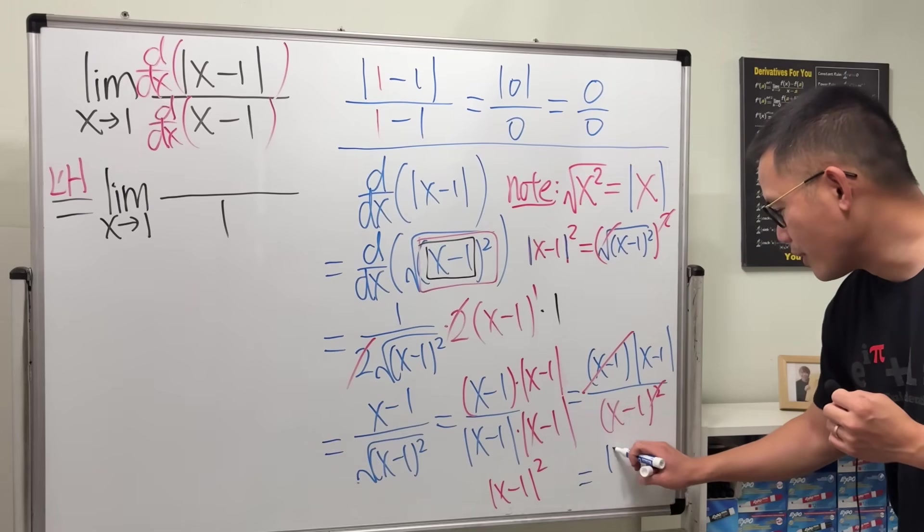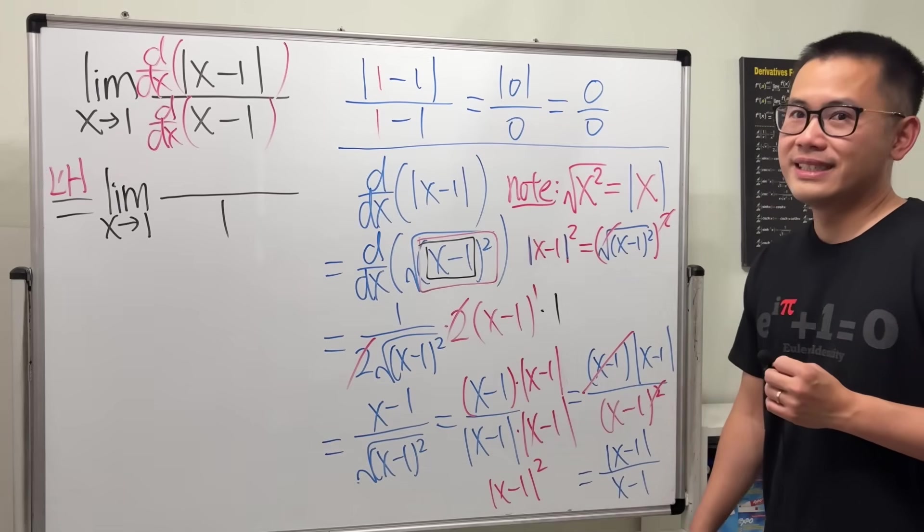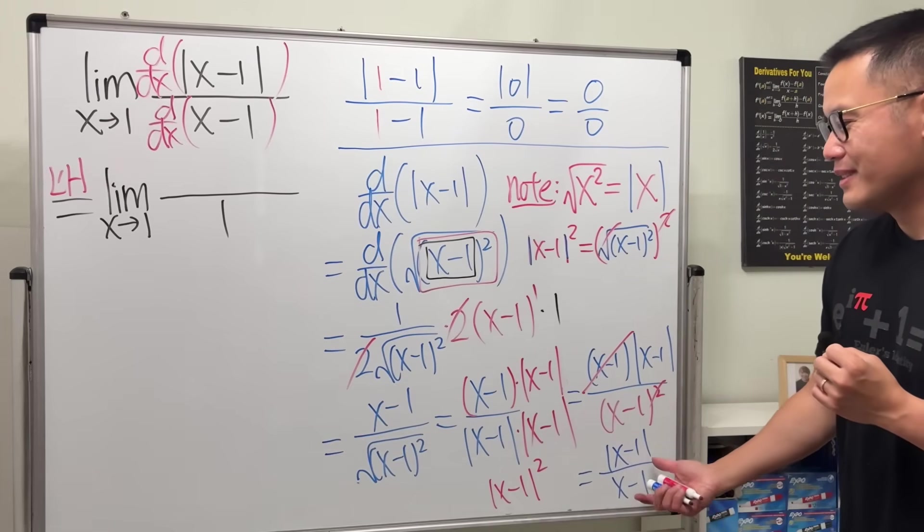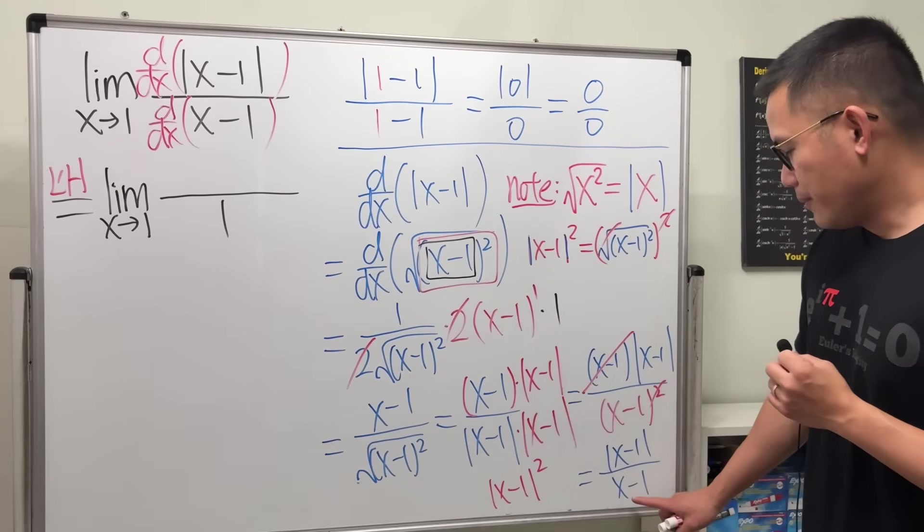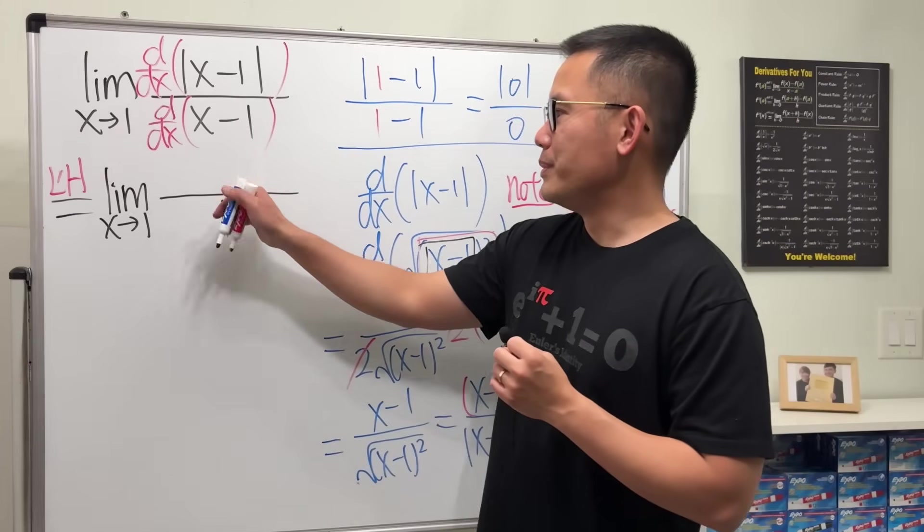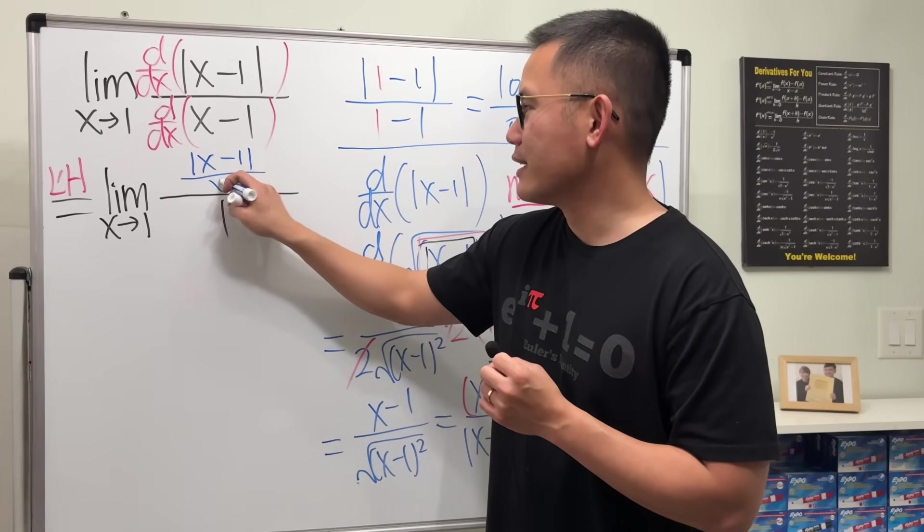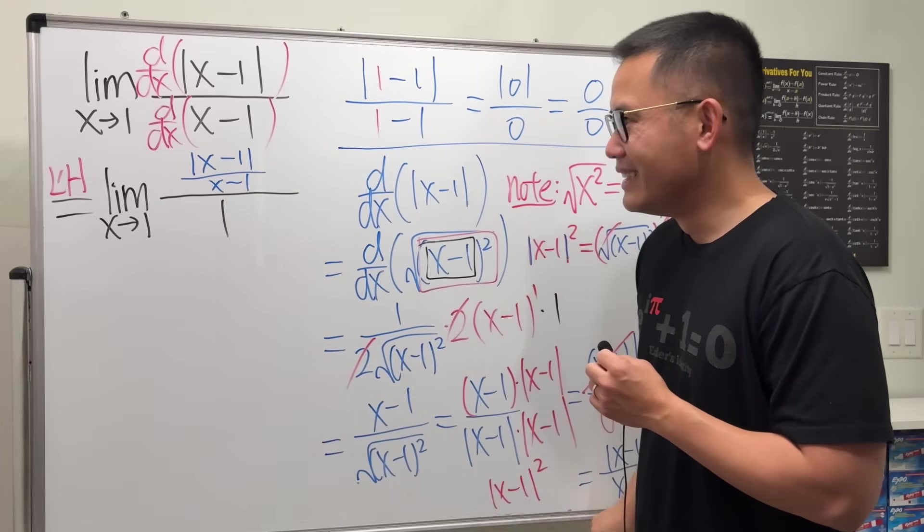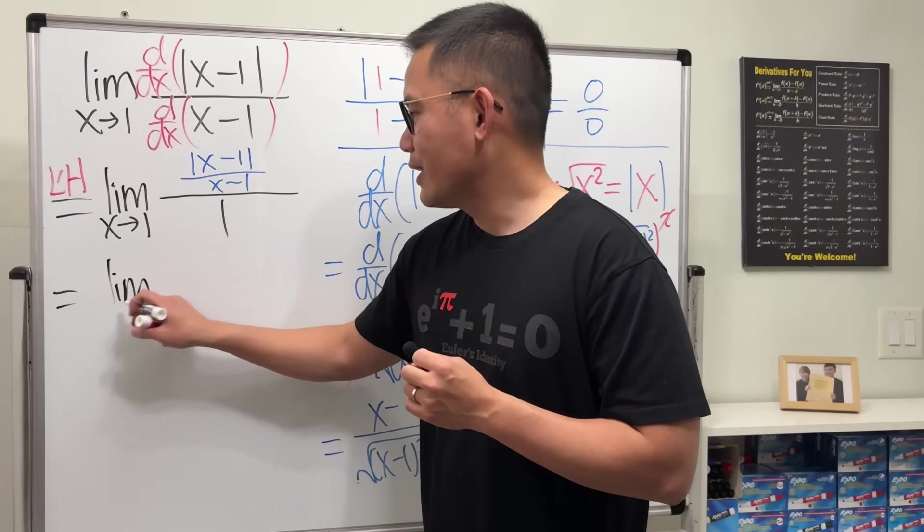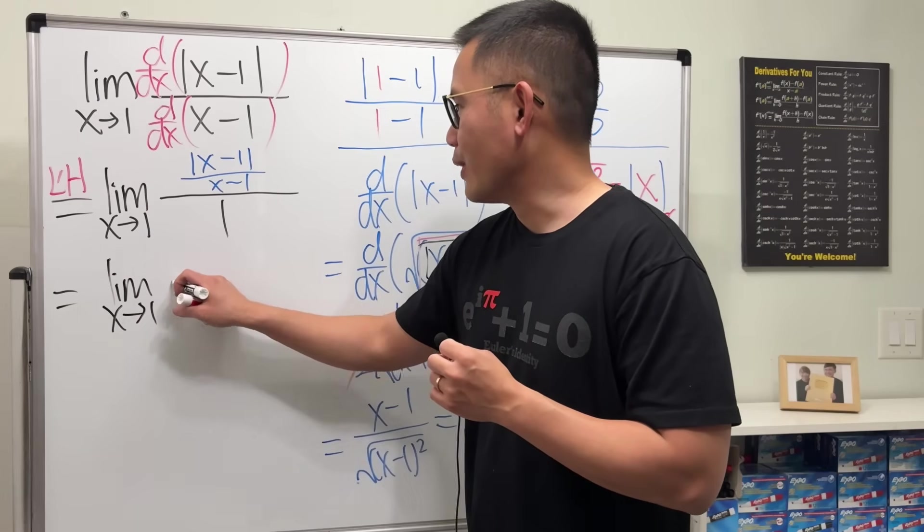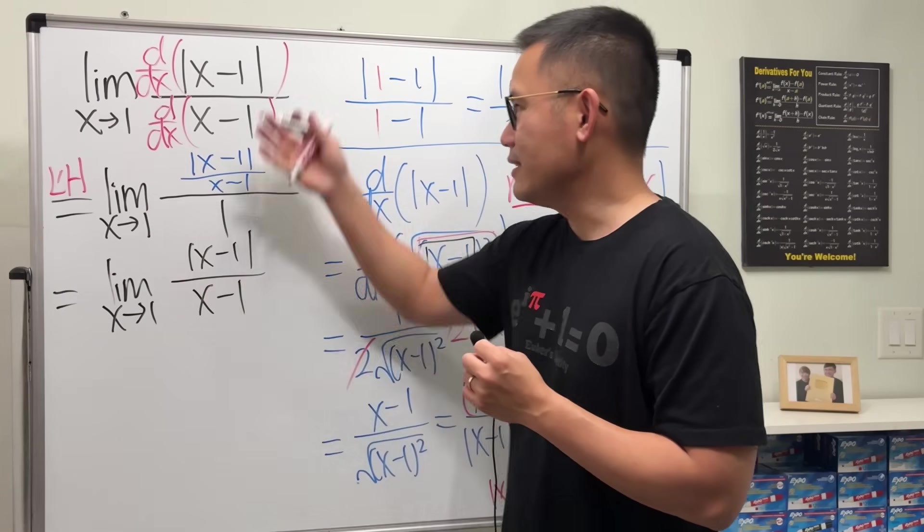You just get the absolute value of x minus 1 over x minus 1 back. In my opinion, this is slightly better because it's the same as the original, which is pretty cool. But anyways, this is going to be on the top here, which is absolute value of x minus 1 over x minus 1. And then, when you divide it by 1, guess what? You get back to the original, exactly the same thing.